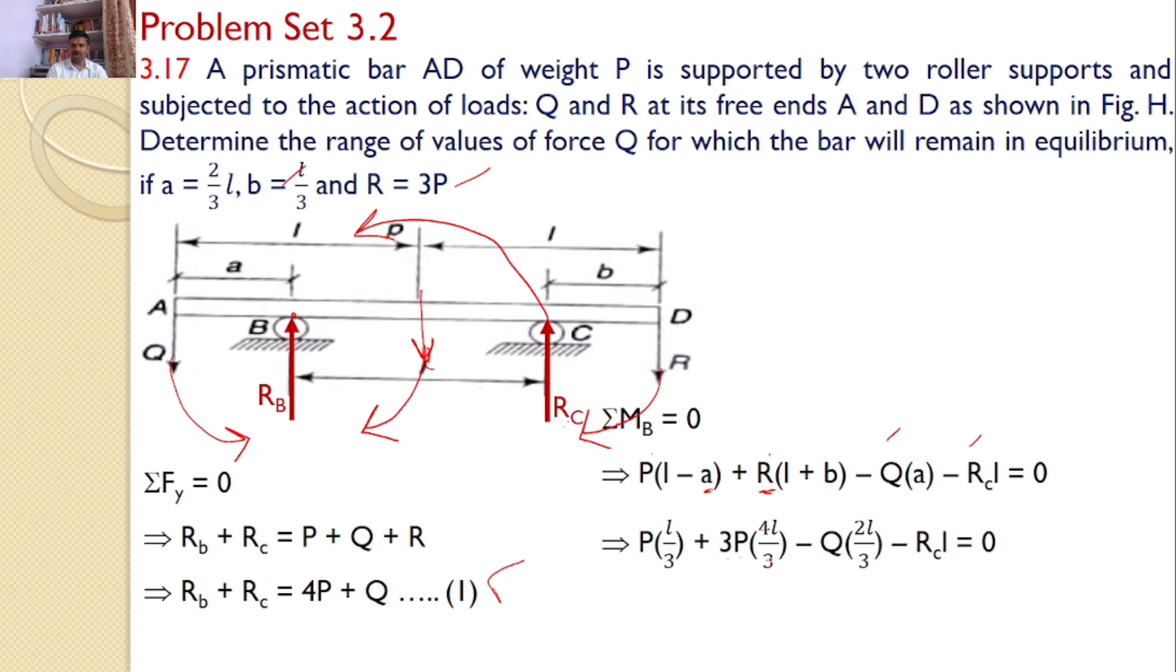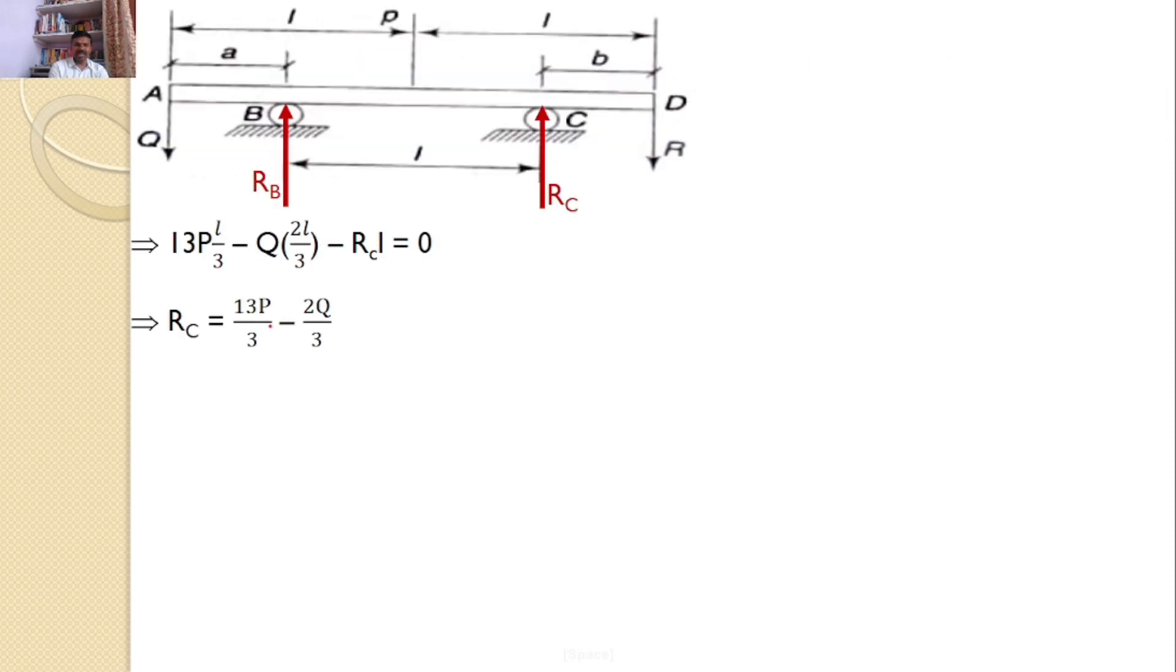So L plus L by 3 gives 4L by 3. Therefore: minus Q times 2L by 3 minus RC times L. Simplifying this equation, I get RC equals 13P by 3 minus 2Q by 3.